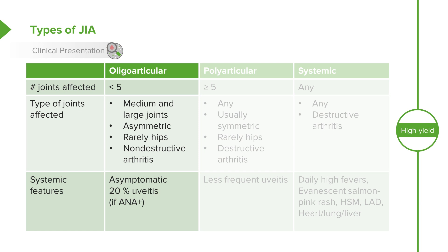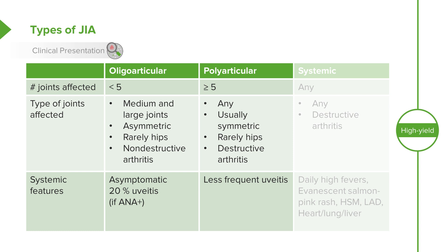Polyarticular JIA usually involves multiple joints and can involve any joint, but this disease is usually more symmetric. Our initial case with involvement of the hands, feet, and ankles would be classic for polyarticular JIA. It rarely involves the hips as well. Unlike the oligoarticular variety, this is a destructive arthritis, and it less frequently causes uveitis.